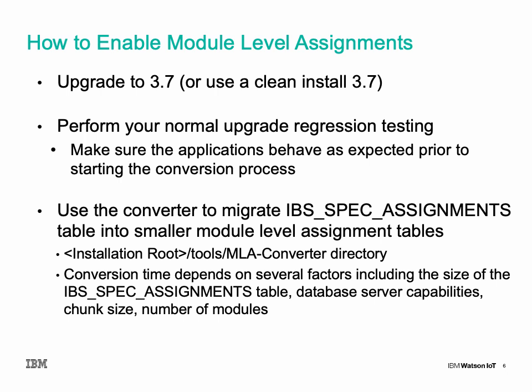To enable module level assignments, the first step is upgrading to TriRiga platform 3.7, or performing a clean install of 3.7. If you've upgraded from an existing TriRiga system, make sure to perform your normal upgrade regression testing first. We want to confirm the application's behavior is as expected prior to starting the conversion process, so that any behavioral differences can be identified as either upgrade-related or conversion-related.